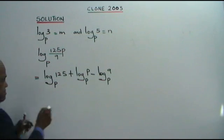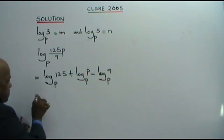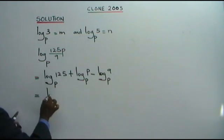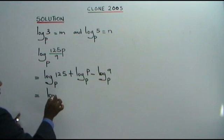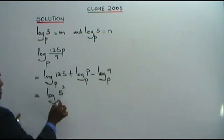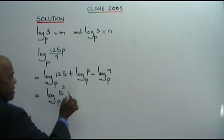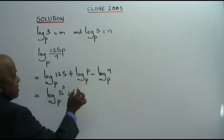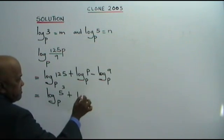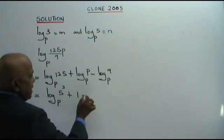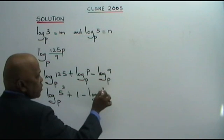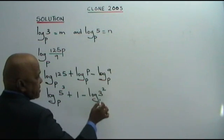Now, what is 125? That is 5 cubed. So we get log 5 cubed, base P, plus log P, base P — which equals 1 — minus log 3 squared, base P.